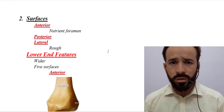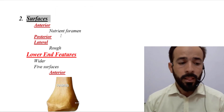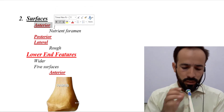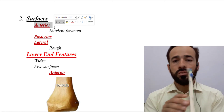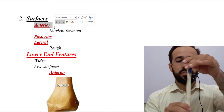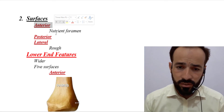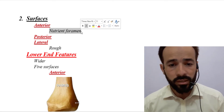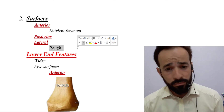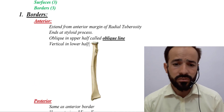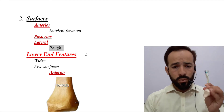The shaft also has three surfaces: the anterior surface, the lateral surface, and the posterior surface. On the anterior surface there is a foramen called the nutrient foramen. The posterior surface is slightly rough in nature.